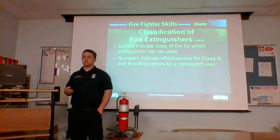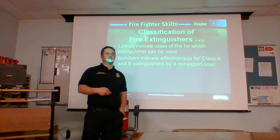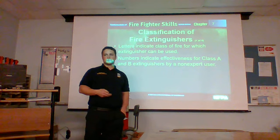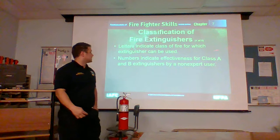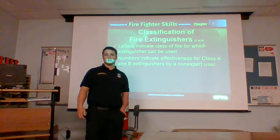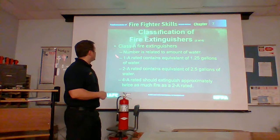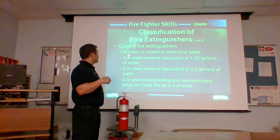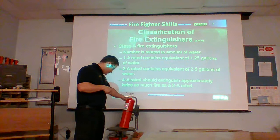We also have class B and class C. Can anybody tell me what class B would be? Electrical — that's exactly right. Such as wiring in your car, wiring in your house, anything that can be energized. Class A fire extinguishers: the number is related to the amount of water. The number on this fire extinguisher is 4A80BC.